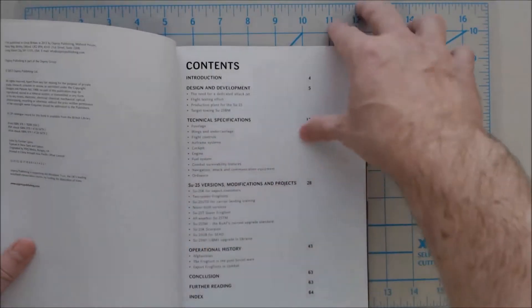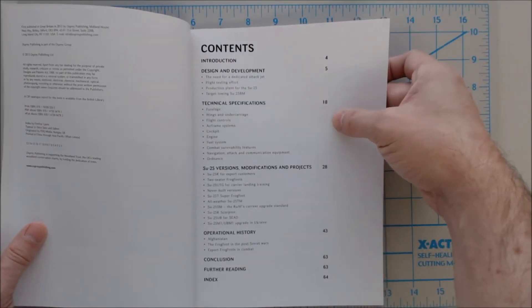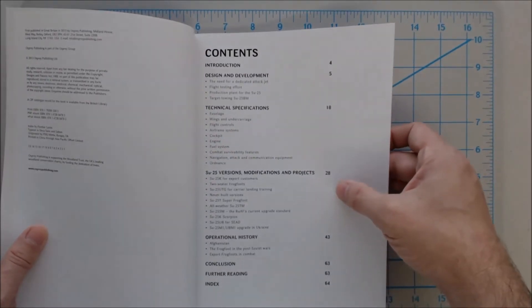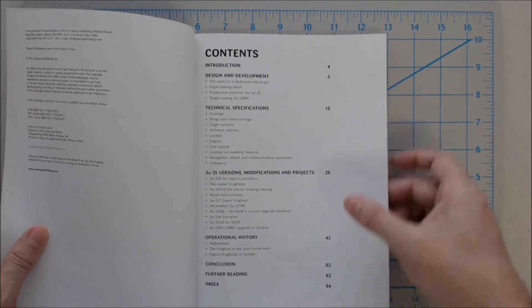Let's take a look at the inside, though. The book has color photography, obviously, a lot of text. Contents: We've got the design and development section, technical specifications, SU-25 versions, modifications and projects, operational history, conclusion, further reading, and index.